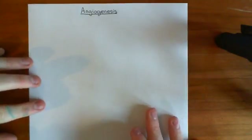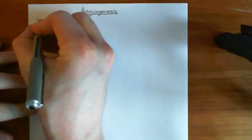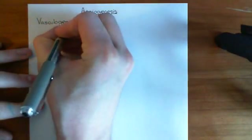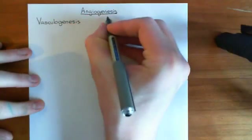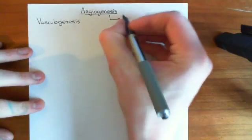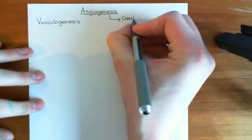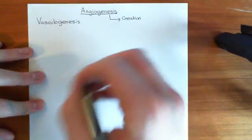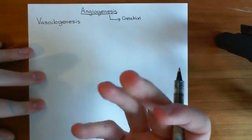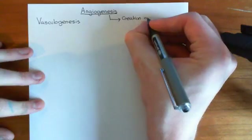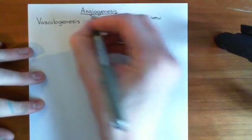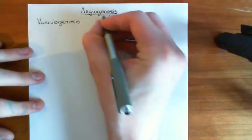Let's define what angiogenesis is and contrast it to vasculogenesis. Angiogenesis means the creation of blood vessels from existing blood vessels - generally from other capillaries, though you can also create new arteries and veins. The word 'angio' means pertaining to blood vessels, and 'genesis' means creation.